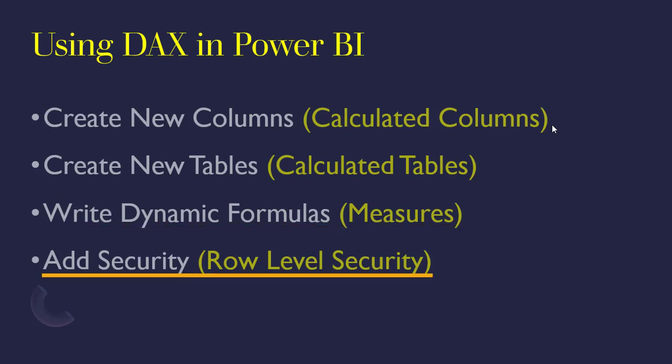We can also use DAX to create row level security. Row level security is what we do to restrict access so that certain users can only see certain portions of our data. This aspect of DAX is not very much pronounced — most people are more focused on calculated columns, calculated tables, and measures — but row level security is also something we use DAX for, and we'll see how to write DAX formulas to create it.